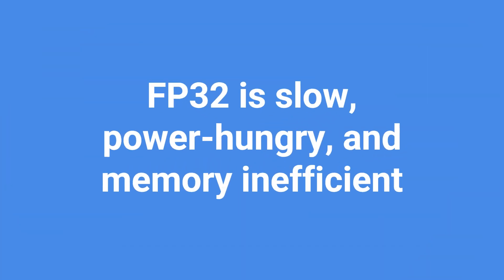The problem is that when you actually take a neural network in FP32 and try to run it in inference or as some sort of production model, you can find that it's very slow, it consumes a lot of power, and the memory footprint is quite large. That can be a concern.